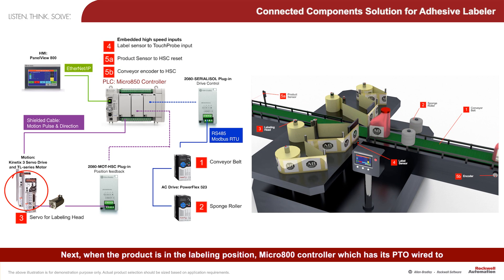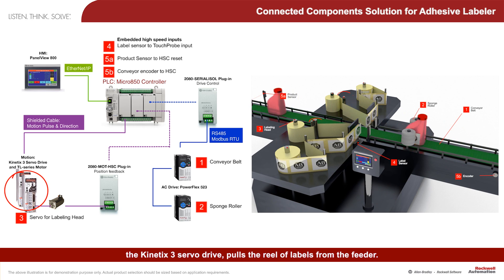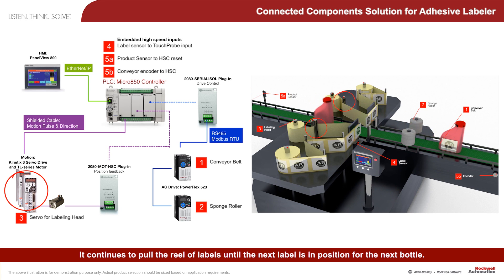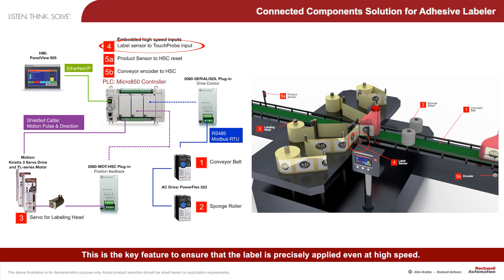When the product is in the labeling position, the Micro 800 controller — which has its PTO wired to the Kinetix 3 servo drive — pulls the reel of labels from the feeder. This causes the label to be applied onto the product. It continues to pull the reel of labels until the next label is in position for the next bottle. The label sensor, which is wired to the touch probe input, registers the exact position of the label.